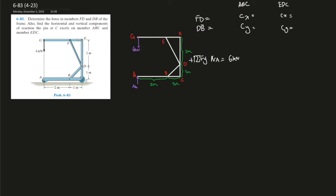It breaks down each component except the two-force members. In this case, the two-force members would be FD and BD. The reason is because for two-force members, if you draw one here and one here, there are two forces, so you can just use the Pythagorean theorem and find the magnitude this way.